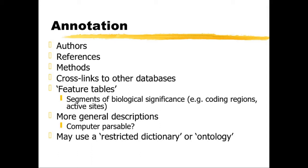So-called feature tables highlight segments of biological significance, such as coding regions in DNA or active sites in protein sequences of enzymes, but also more general descriptions. The problem with these is whether they can be parsed and understood by a computer. Often we use things like restricted dictionaries of particular keywords, or ontologies — which are like dictionaries that form trees — in order to describe things so that they can be compared automatically.